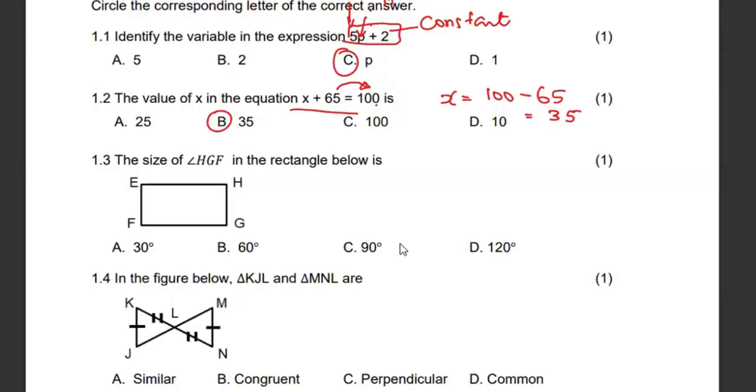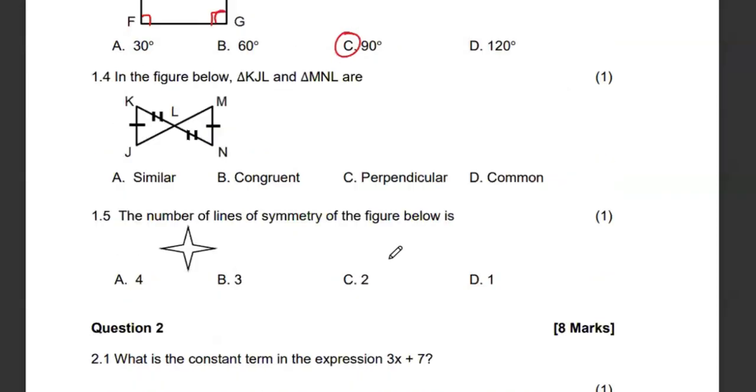Then the size of angle HGF in the rectangle below. We know that angles in the rectangle will always be 90 degrees, so this angle g must be 90. Then in the figure below, triangle KJL and MNL are what? We can see that they are having the same markings and they are having the same size. So we say that these triangles are congruent. For as long as the triangles are exactly the same, exactly identical in size and angles, then the triangles become congruent.